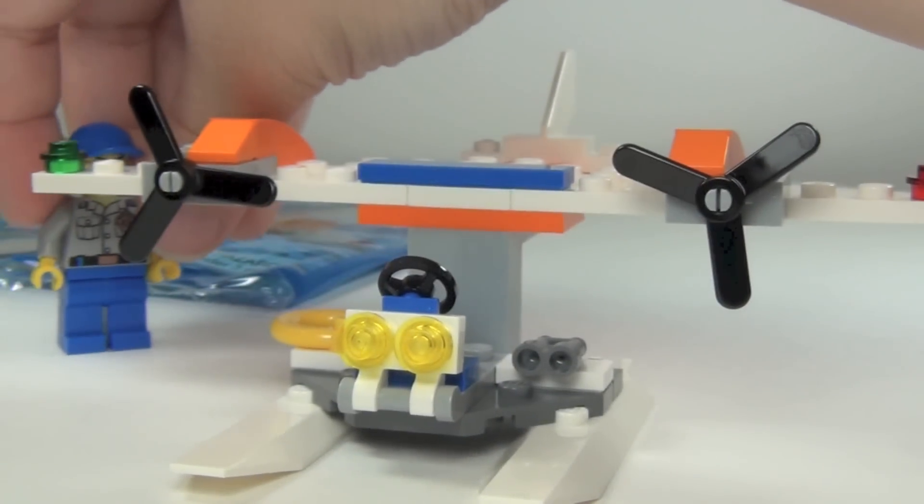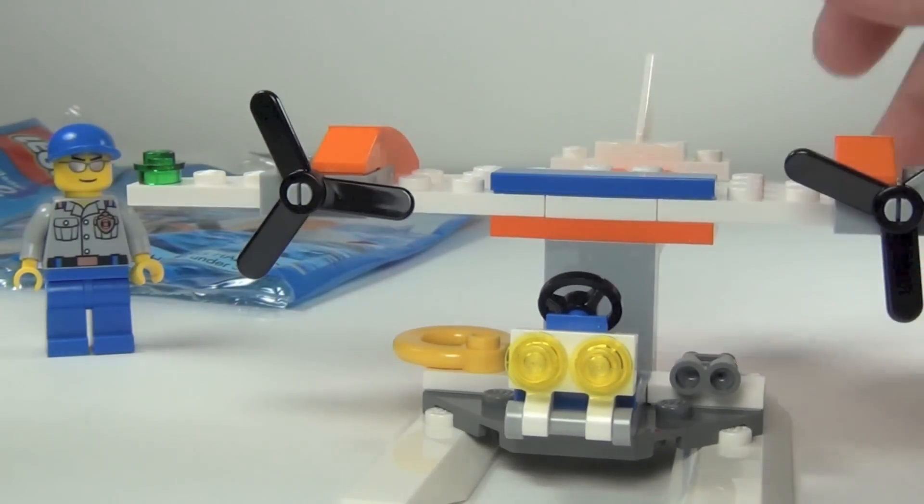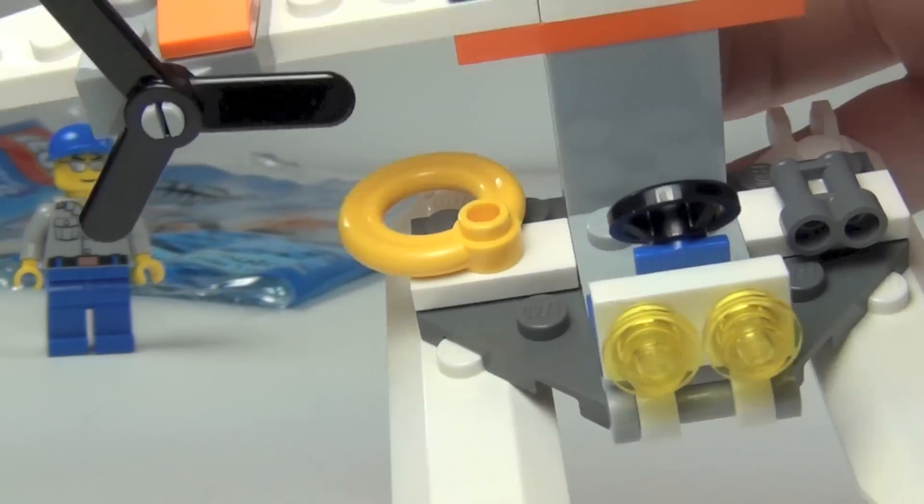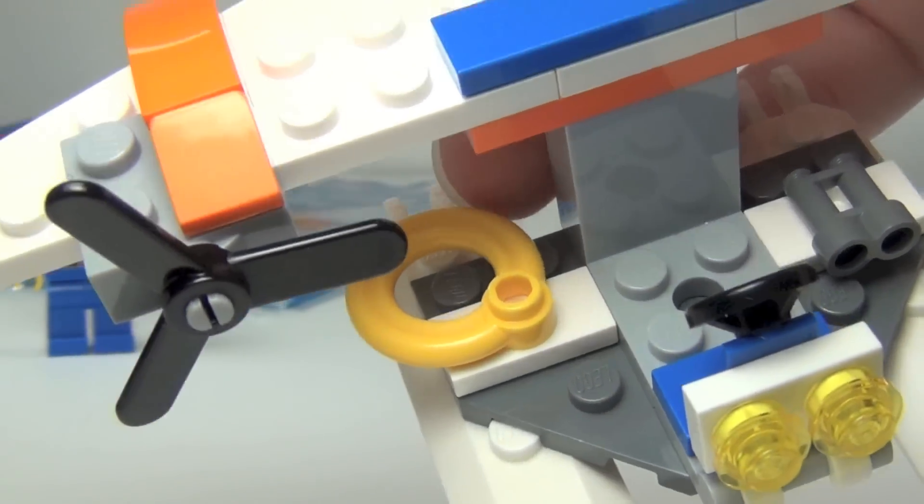You don't expect a lot from a polybag, of course. But here's his little plane. He's got binoculars on this side. He's also got a life preserver on this side.